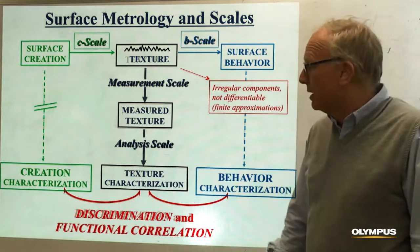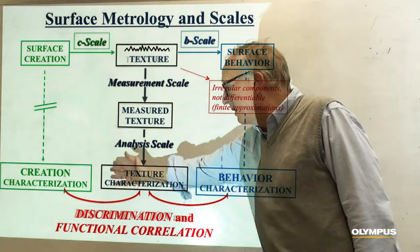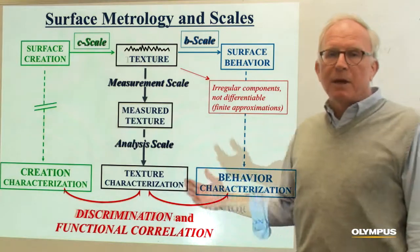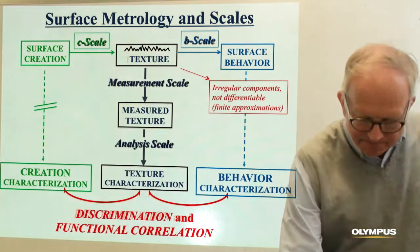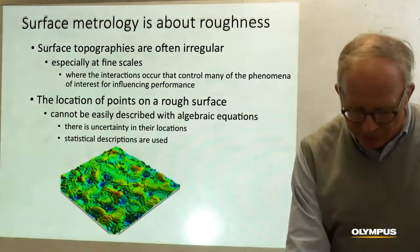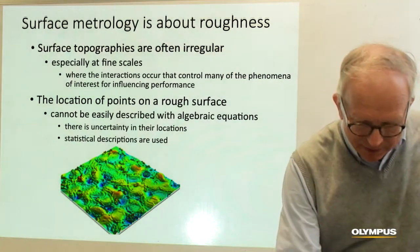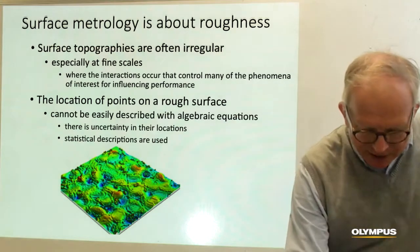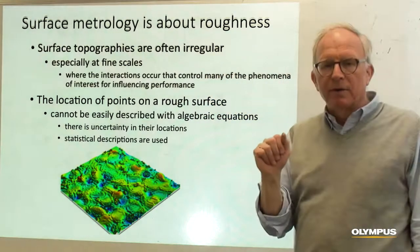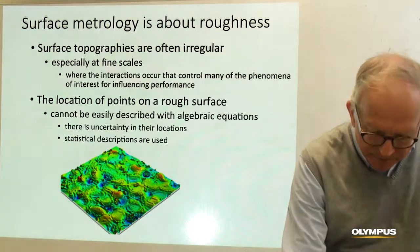We'd also like to find correlations, so that we know how to design the surface processes and the manufacturing processes that make the surface, and we can design the surface we want that behaves the way we want it to for friction or adhesion. So surface metrology is about roughness. Here's an example of a rough surface. Surface topographies are often irregular, especially at fine scales, and these are also the scales where the interactions occur that are going to control many of the phenomena important for performance.